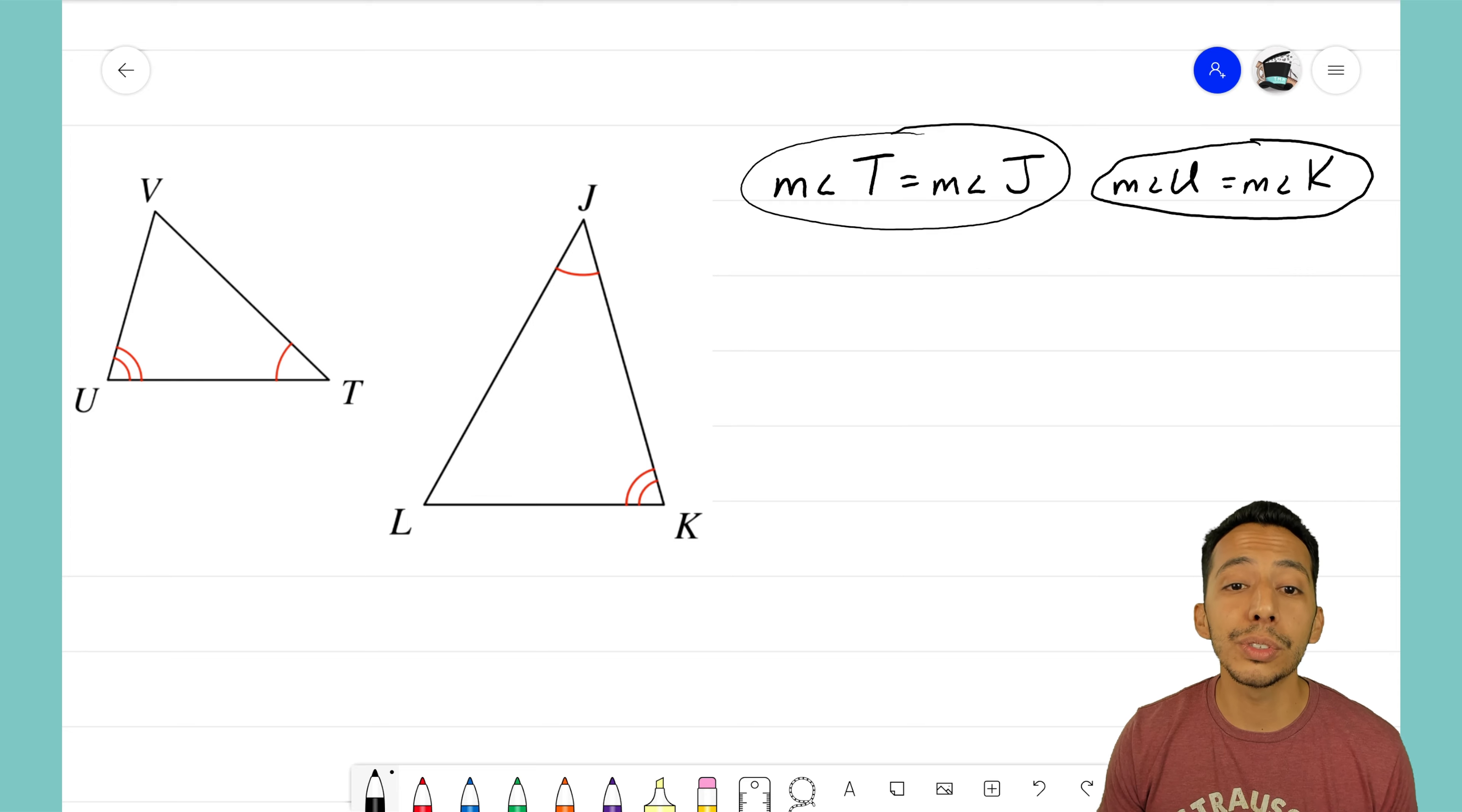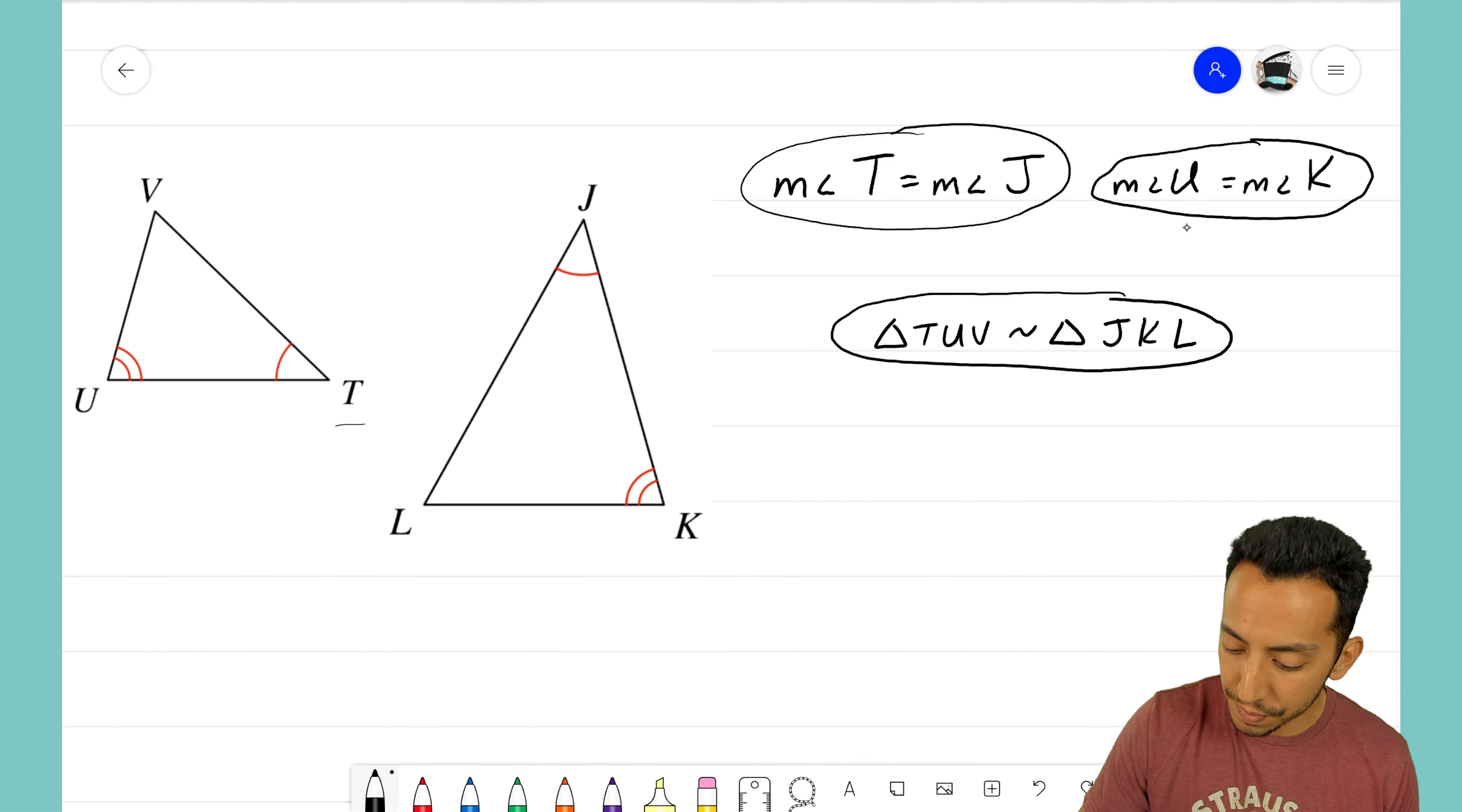So I can conclude then that triangle—we'll call the one on the left TUV—is similar to the triangle on the right. Let's see, if I call this one TUV, I have to trace it the same way, so this one would be called triangle JKL. I'm going to write that out: triangle JKL. That is our conclusion.